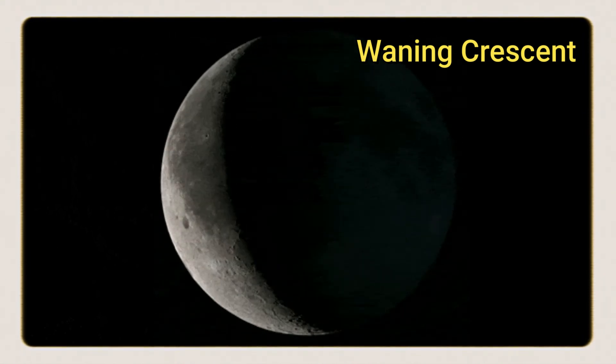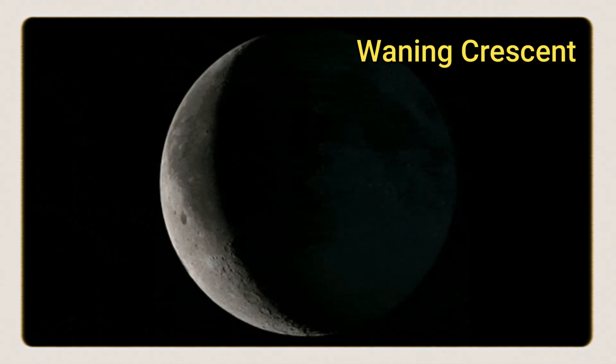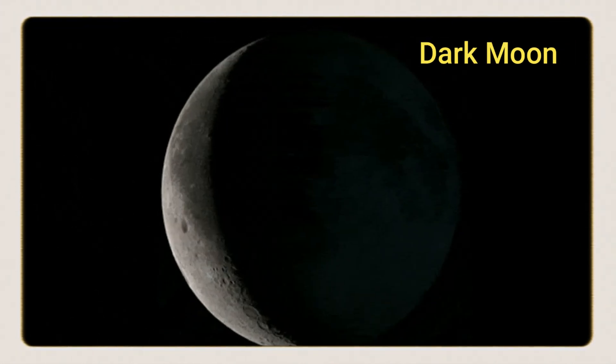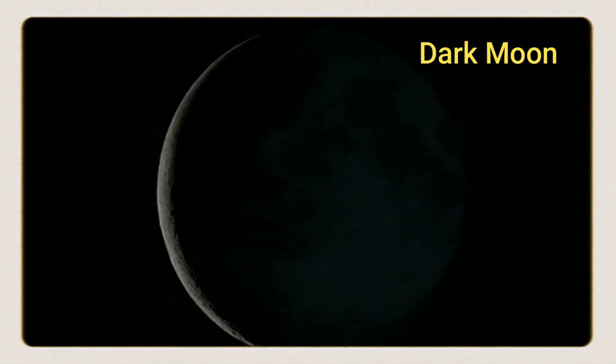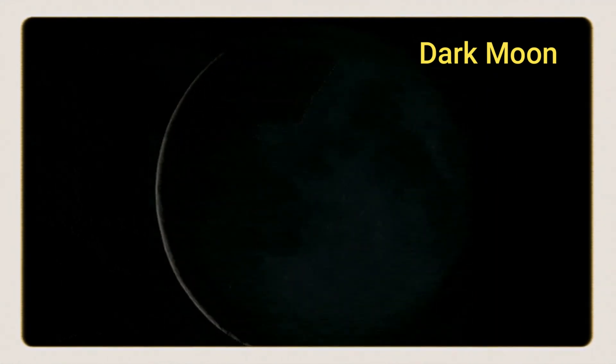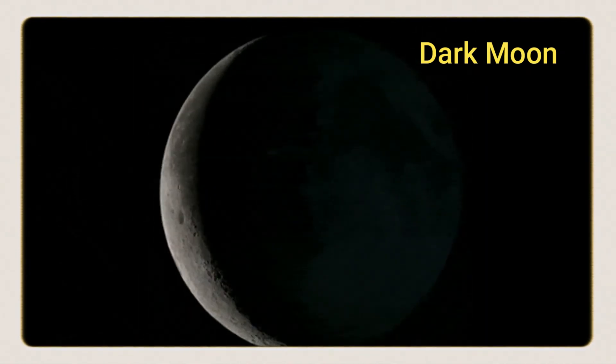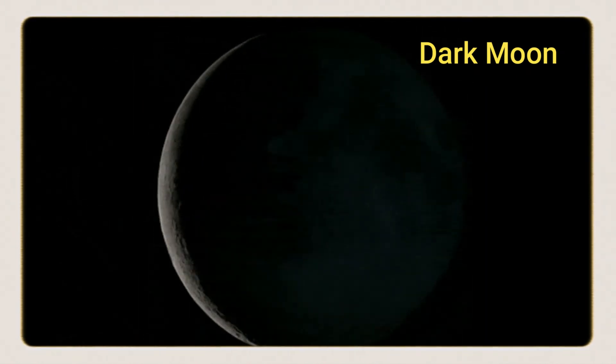After waning crescent, it reaches the dark moon. It is the last visible crescent of the waning moon. It is nearly the same as new moon — the night is completely dark in this phase.